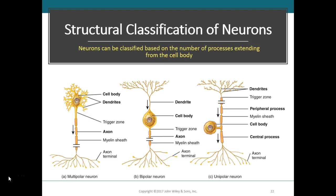Before we begin talking about action potentials in neurons, we need to learn how to classify them based on their structure and their function. Structurally, we classify them based on the number of processes extending from the cell body, or soma. Multipolar neurons usually have several dendrites and one axon — most neurons found in the brain and spinal cord are this type, as well as all motor neurons.